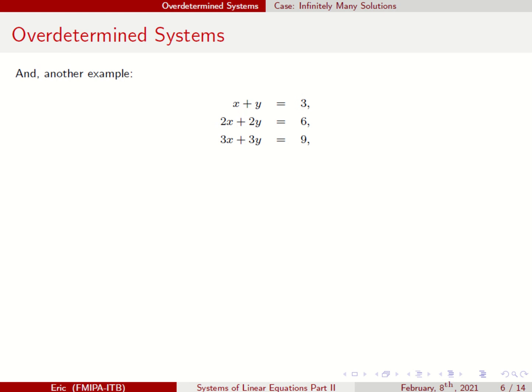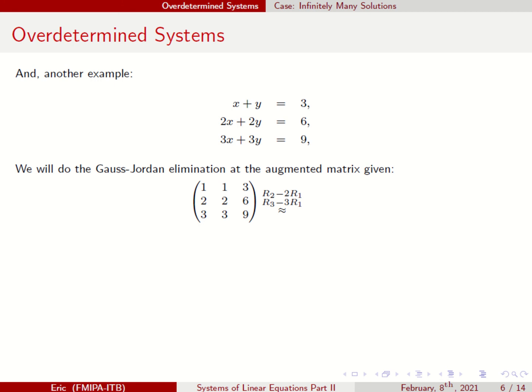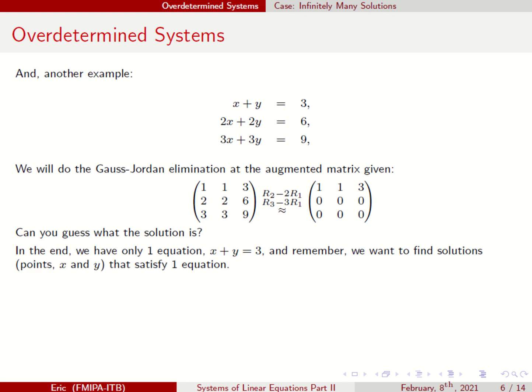The last case: X plus Y equals 3, 2X plus 2Y equals 6, and 3X plus 3Y equals 9. We apply Gauss-Jordan elimination to the augmented matrix. After reducing to row echelon form, there is only one equation remaining — all the others are just linear combinations of the first. Since the number of equations is less than the number of variables, you have infinitely many solutions.